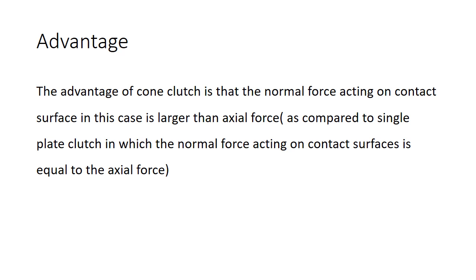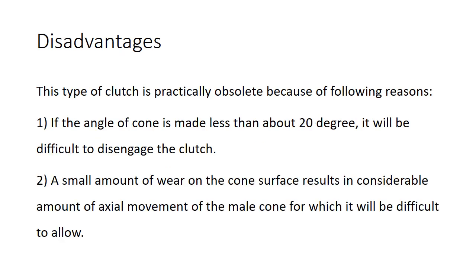Disadvantages: This type of clutch is practically obsolete because of the following reasons. First one: if the angle of the cone is made less than 20 degrees, it will be difficult to disengage the clutch. It means the male cone will be permanently engaged with the female cone.